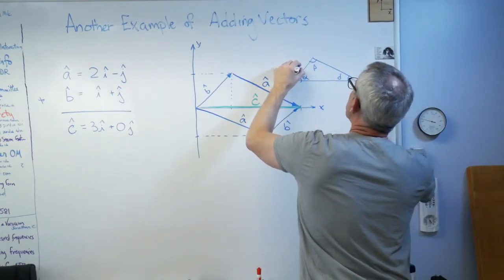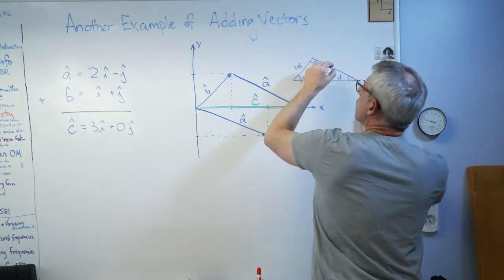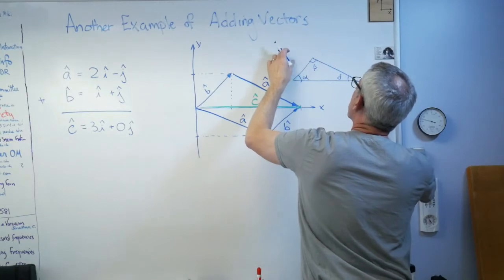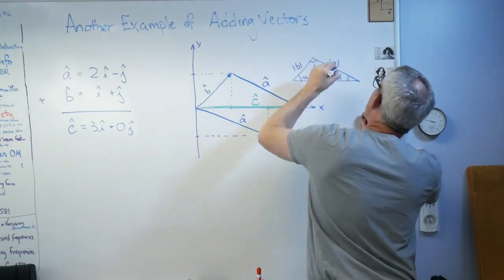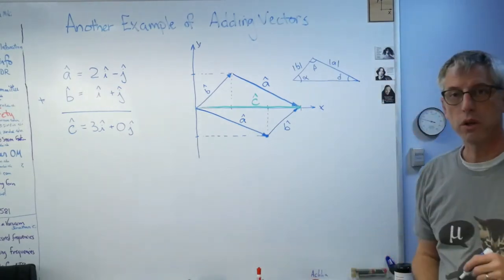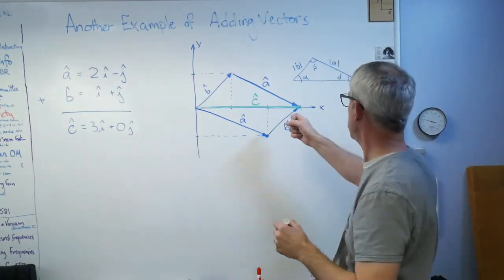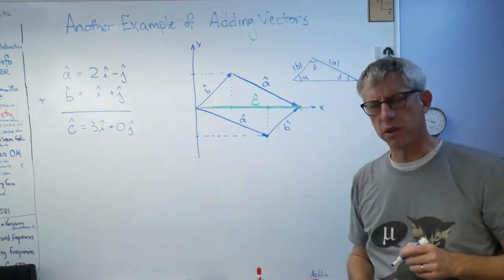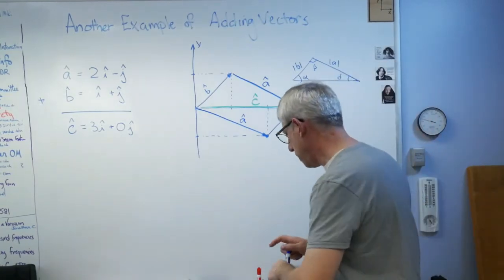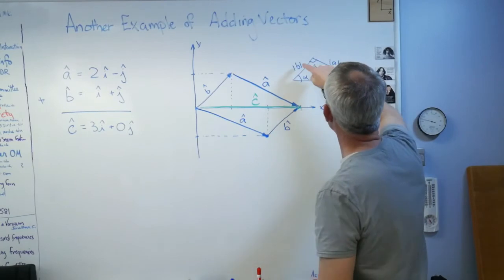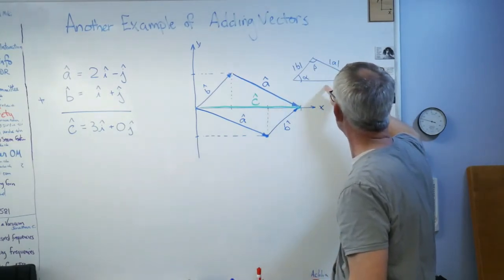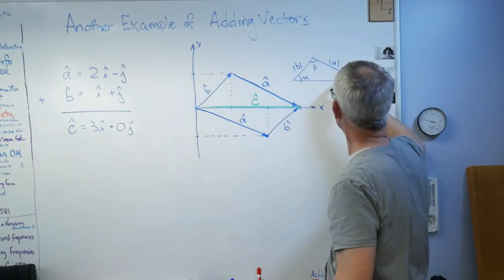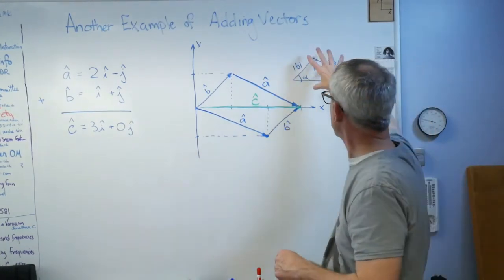That's alpha, we'll call this beta, and I don't know, delta. And I know what this is—that's the magnitude of b̂, and that's the magnitude of â right there. Could you use that to find the magnitude of ĉ? Absolutely. I think that's the law of cosines. You can do that. There's enough trigonometry and trigonometric identities.